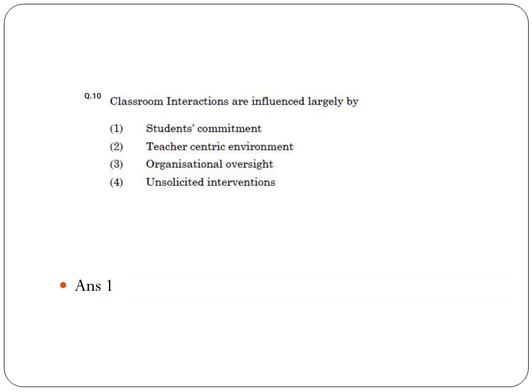Question 10: Classroom interactions are influenced largely by students' commitment, teacher-centric environment, organizational oversight, or unsolicited interventions. Any sort of interaction can only be made successful by the participation of students. If it is a teacher-centric environment, interactions will not take place to the expected level. It is the students that make it possible — every single participant should ask questions for classroom interaction to be successful. So it is the commitment level of the students that matters.